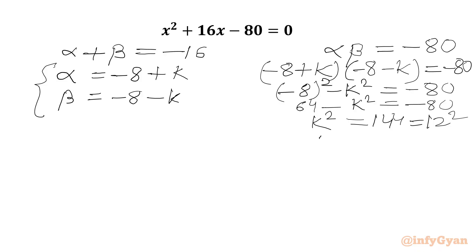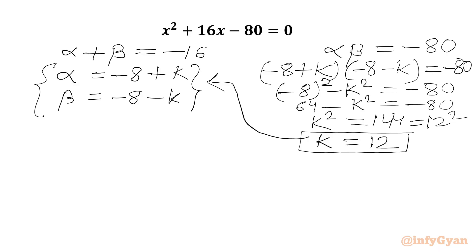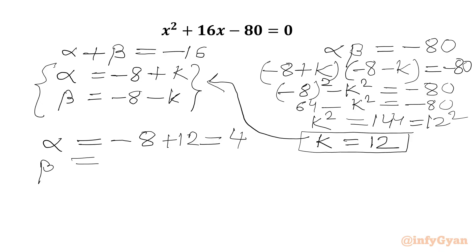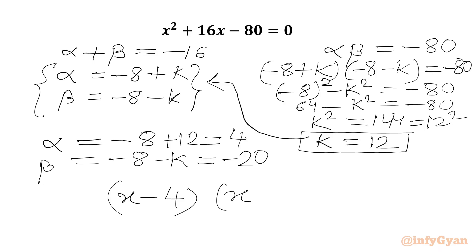Taking the square root and ignoring the negative value, k = 12. So alpha = −8 + 12 = 4, and beta = −8 − 12 = −20. Therefore the factors are (x − 4)(x + 20) = 0.